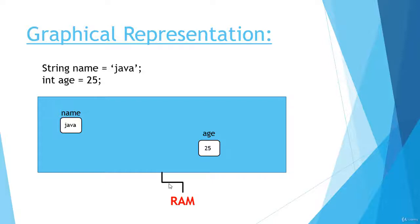A variable is always stored in the RAM with some name, and with the help of that name we can access the variable and its value. In the second line, I have typed: int age equals to 25. Now 'int' is the data type — which type of data we are going to store in the age variable. 25 is our integer value, and you can see a white box on the RAM with the name 'age'. This is also a memory location — its name is 'age' and we have stored 25 as its value.